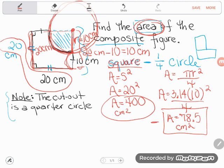Well, I said I would subtract. So I'm going to take that 400 of that total square. I'm going to subtract the 78.5 square centimeters. And that should give me the area of my remaining piece.